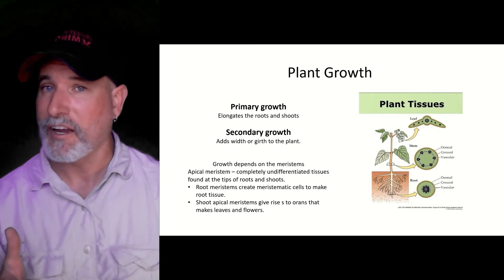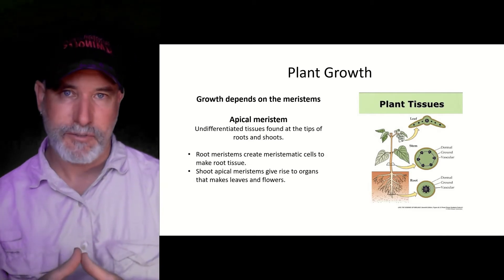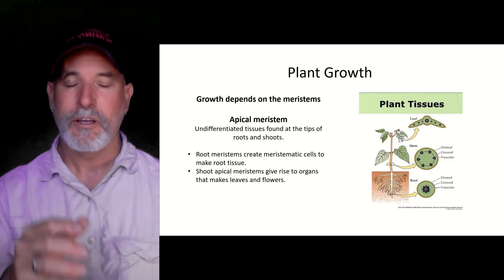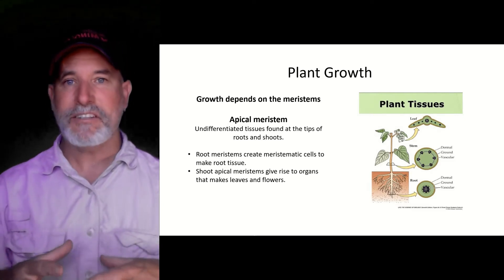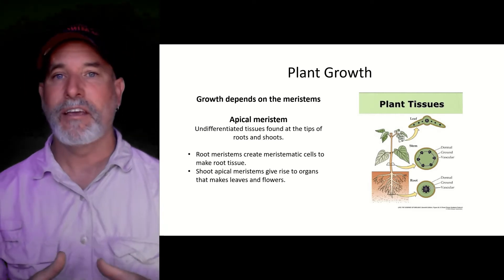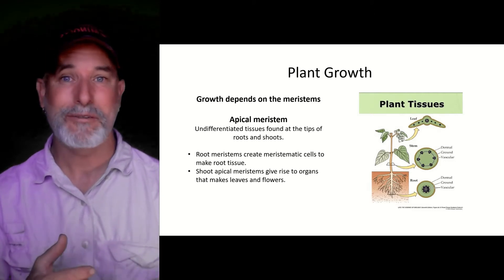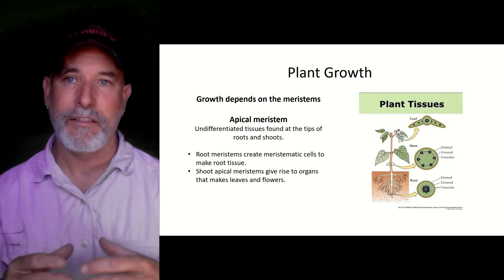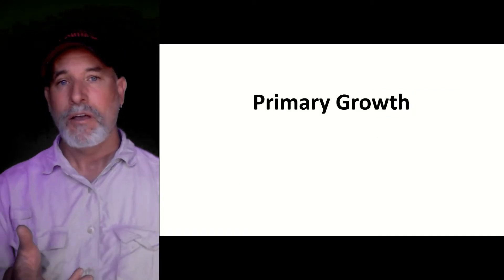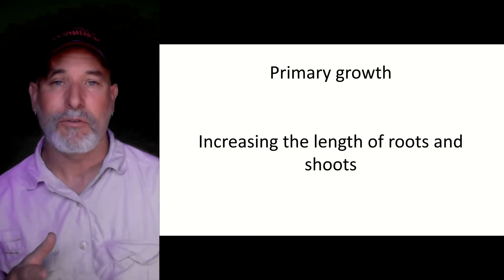Our apical meristems are on the tips of our shoots and roots and they're important for elongating. As they divide through mitosis — asexual reproduction — they give rise to different types of tissues: protoderm, cambium, and ground meristems. These cells then differentiate into the actual tissues and organs that make up the plant. Let's begin with primary growth, where we're just increasing the length of a root or a shoot.